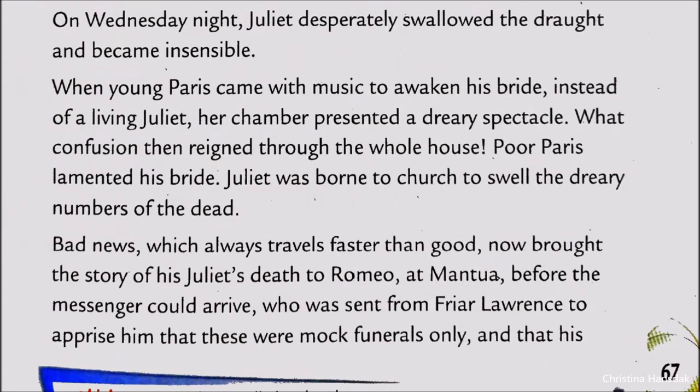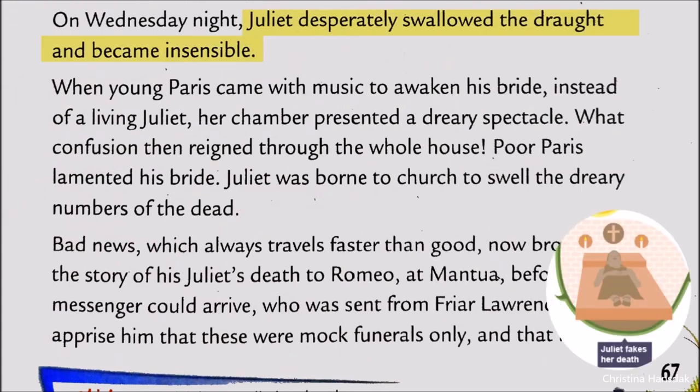On Wednesday night, Juliet swallowed a dose of the medicine and became insensible. The marriage ceremony with Count Paris was to take place on Thursday. So before the marriage ceremony, on Wednesday night, Juliet took the potion.